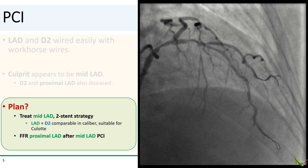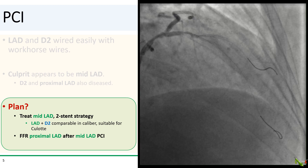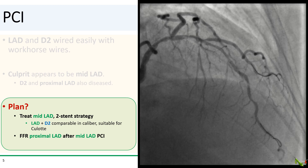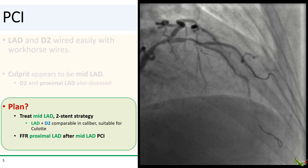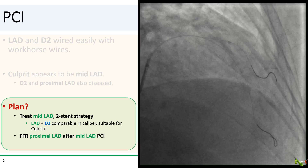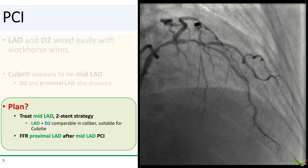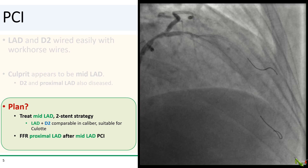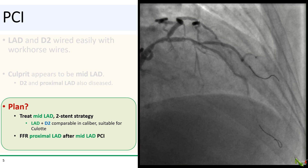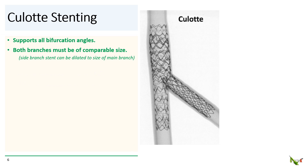All right, so here's the plan. We're going to treat the mid-LAD with a two-stent strategy. The LAD and D2 appeared comparable in size, so it seems suitable for culotte. And after stenting the mid-LAD, we're going to do FFR and decide if the proximal LAD also needed to be stented.